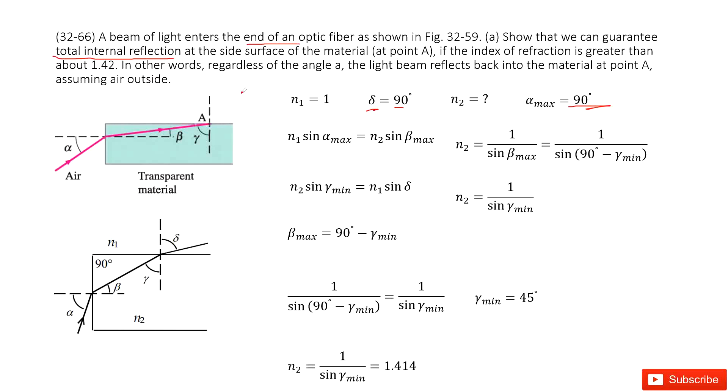So now we can see what is n2. That is what we want to show, right? We want to find what is n2, show that we can guarantee it is a total internal reflection. That means we can determine what is n2.